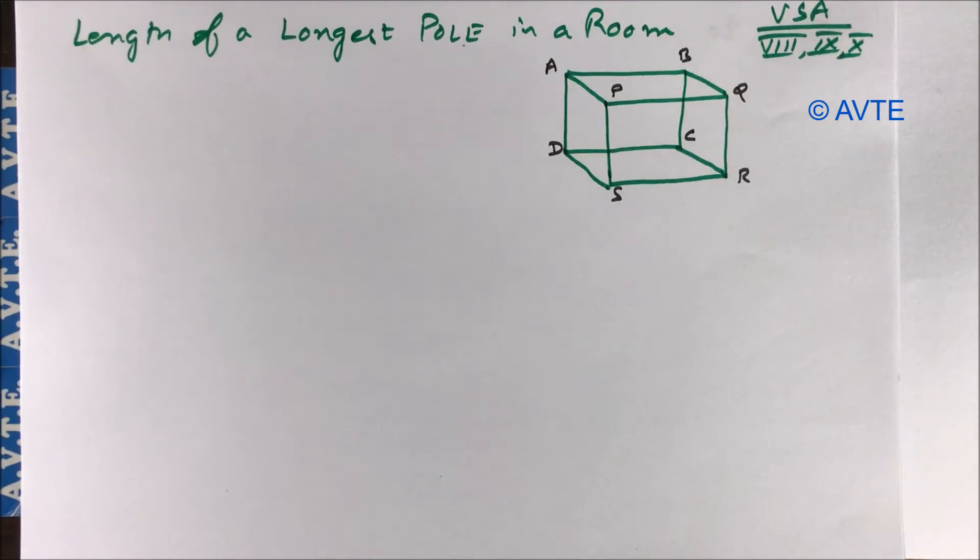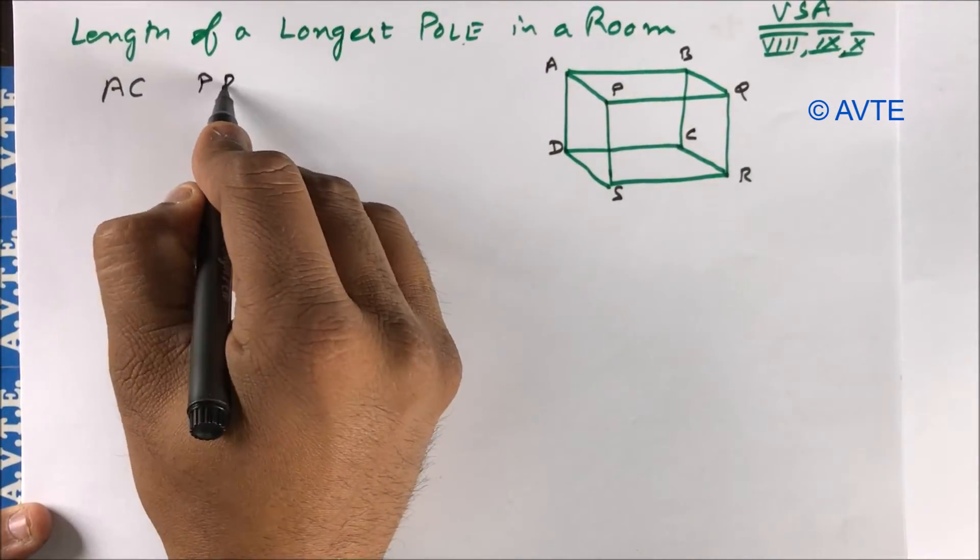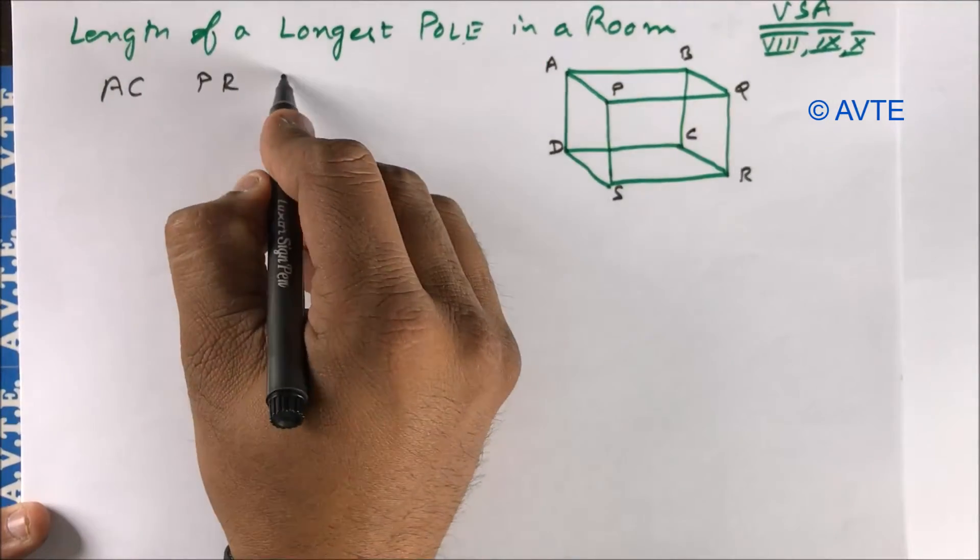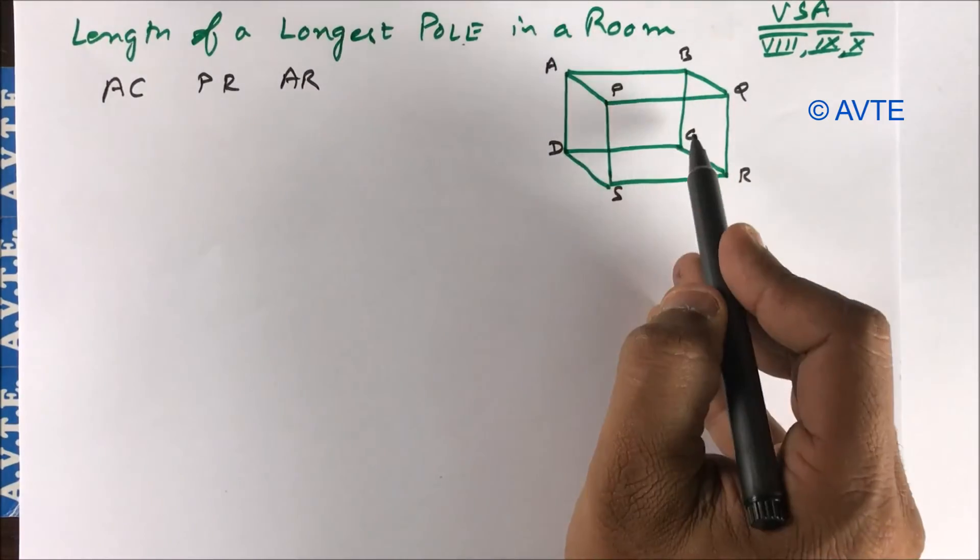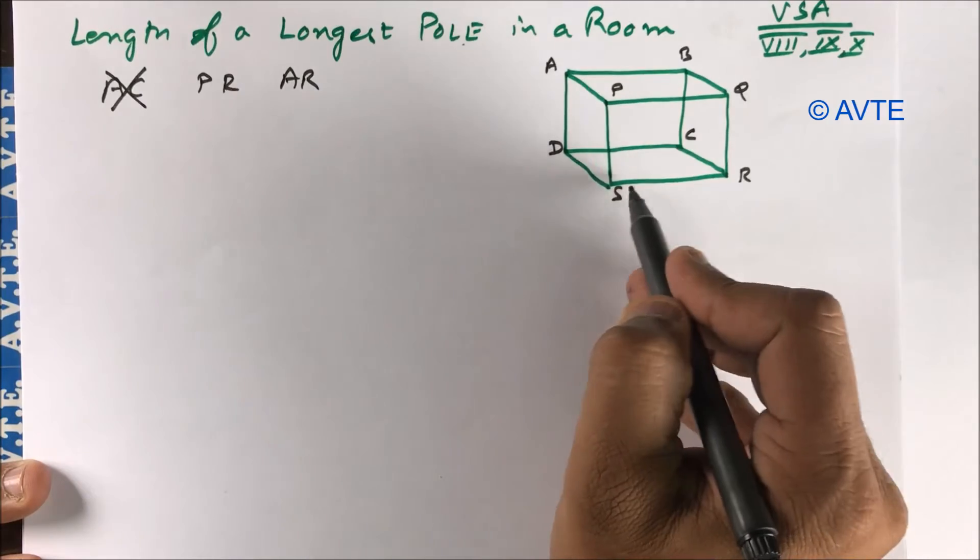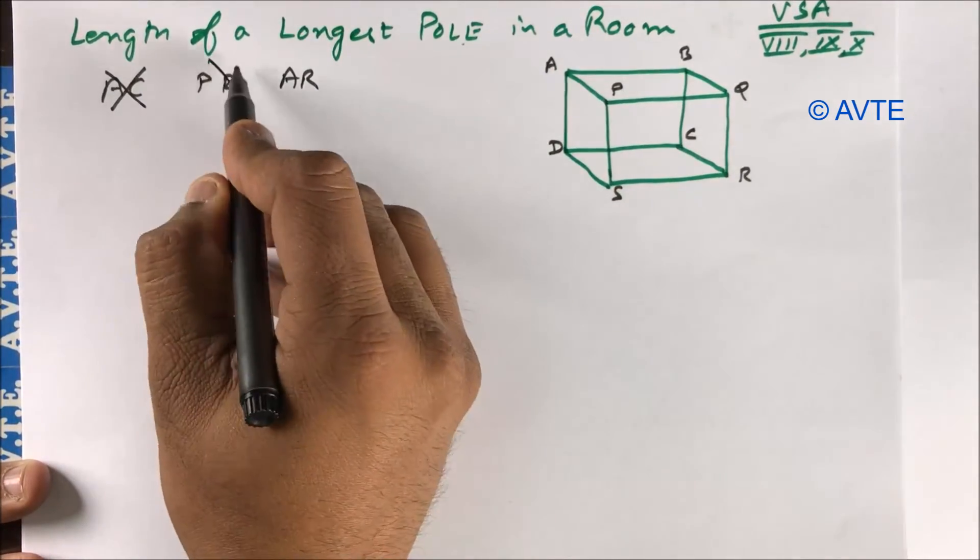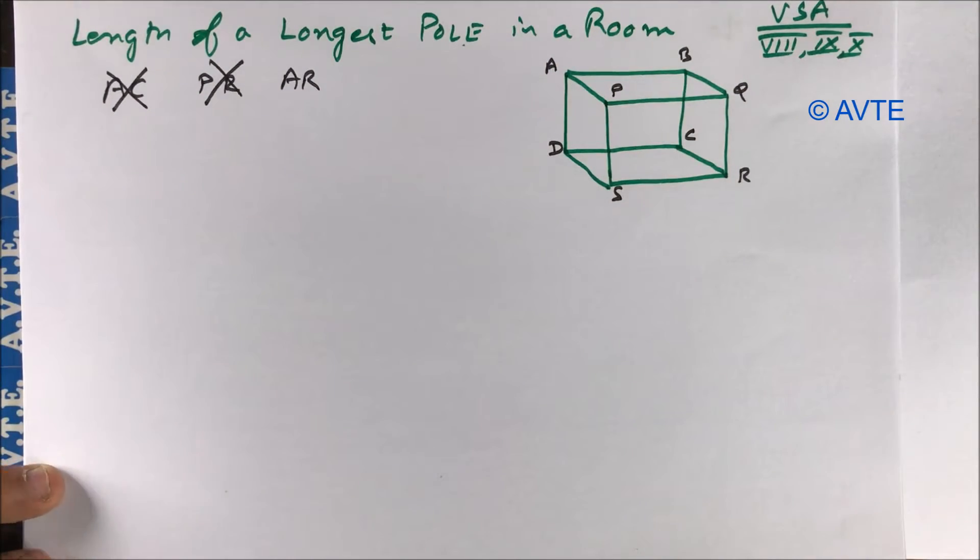So which is the longest pole? AC, PR or AR? AC is the diagonal for this face so it is not longest pole. PR is the diagonal for this face so it is not longest pole. Longest pole is A to R from one side room right top to the other side bottom left side.